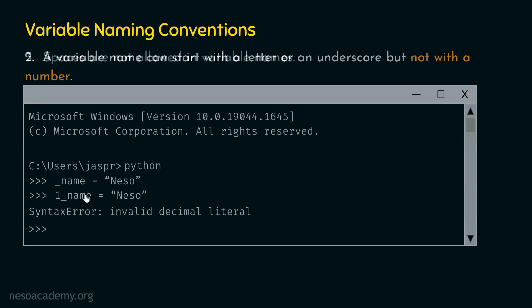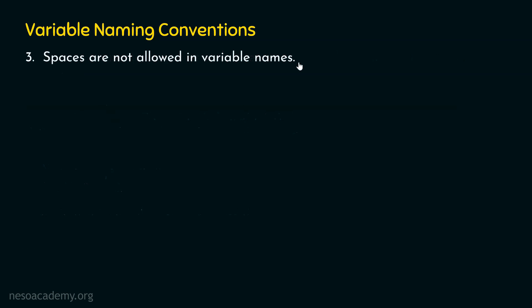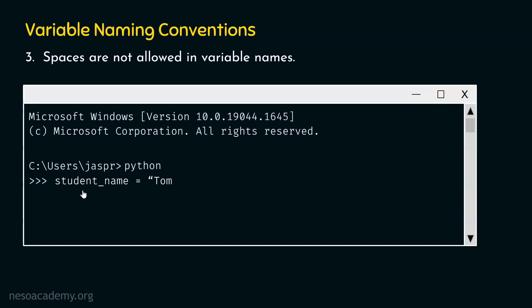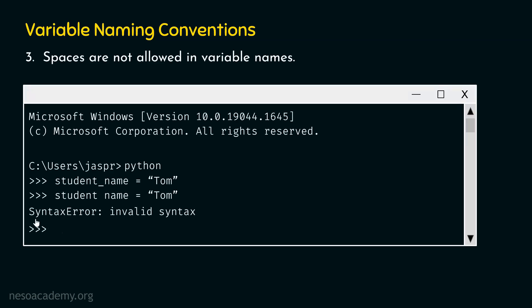Let's move to rule number three: spaces are not allowed in variable names. We cannot use spaces, but in their place we can use underscores. For example, if we type student_name = 'Tom' and hit enter, we will not get any error. But if we type student name = 'Tom' with a space, we will get a syntax error. Whenever we have multi-word variable names, we can use underscores to separate those words.